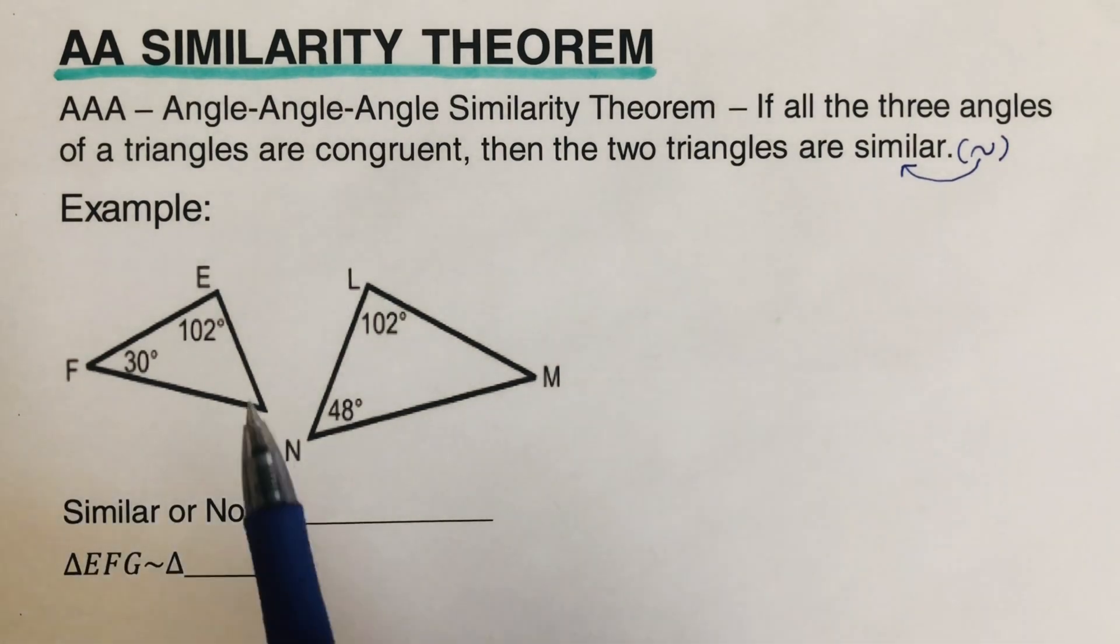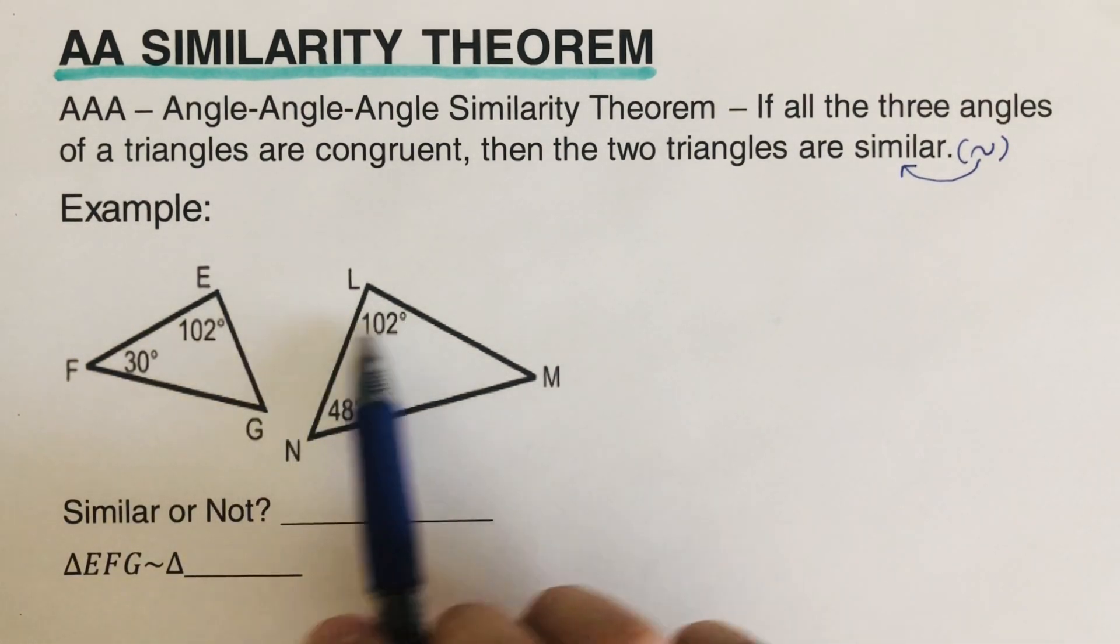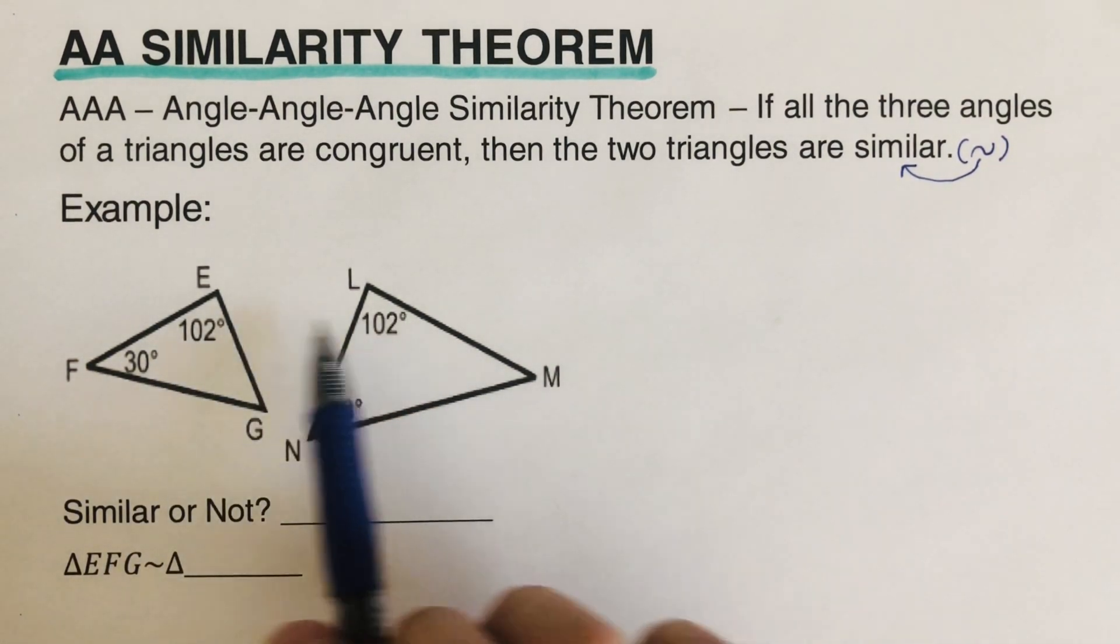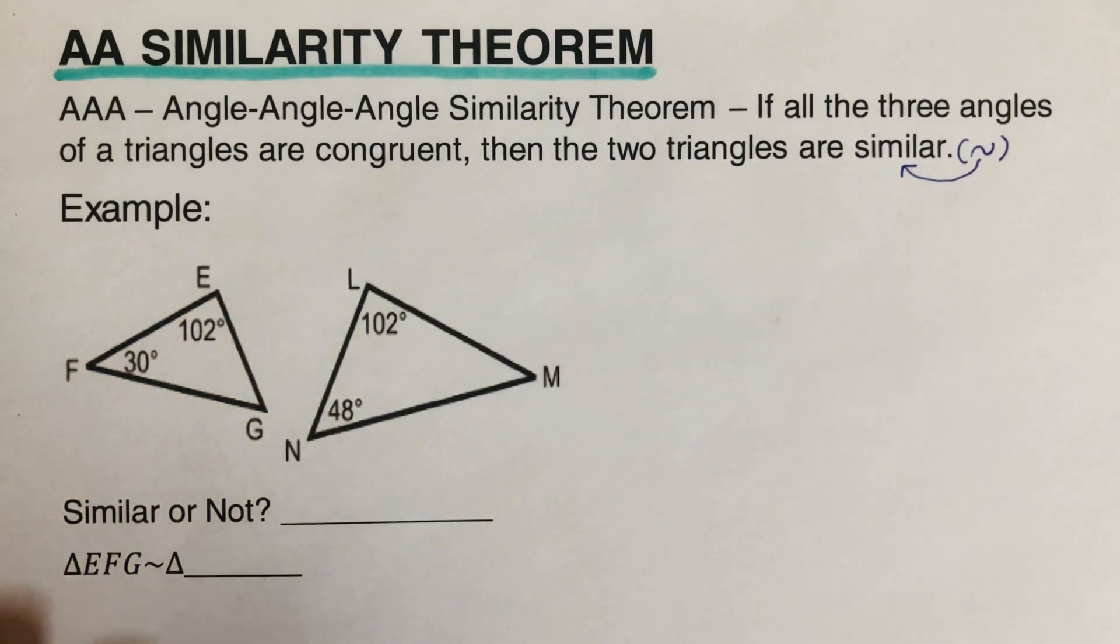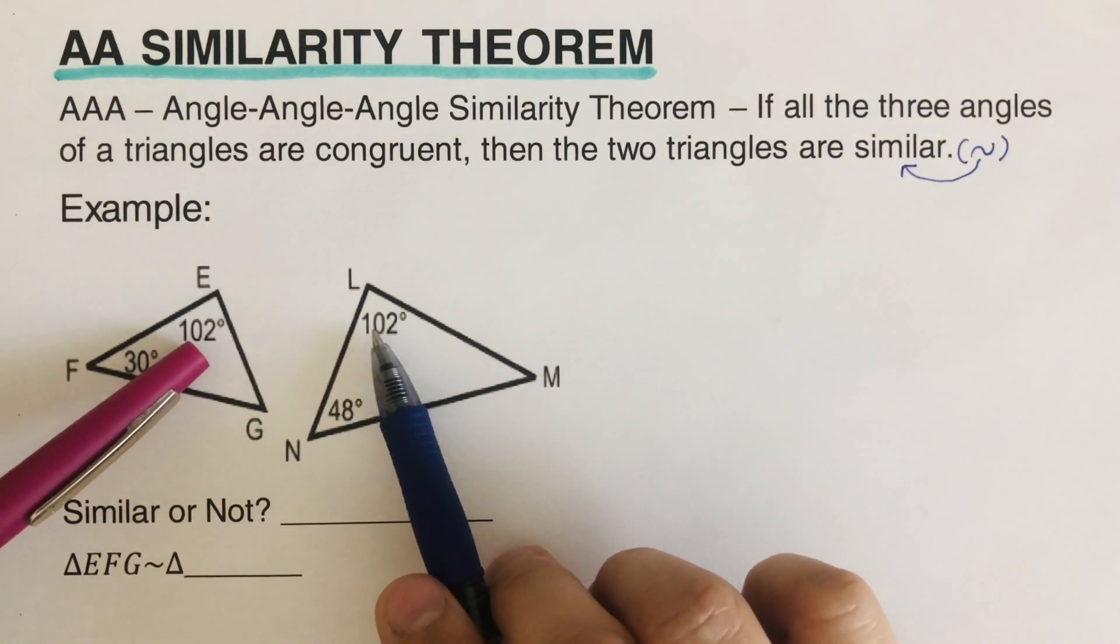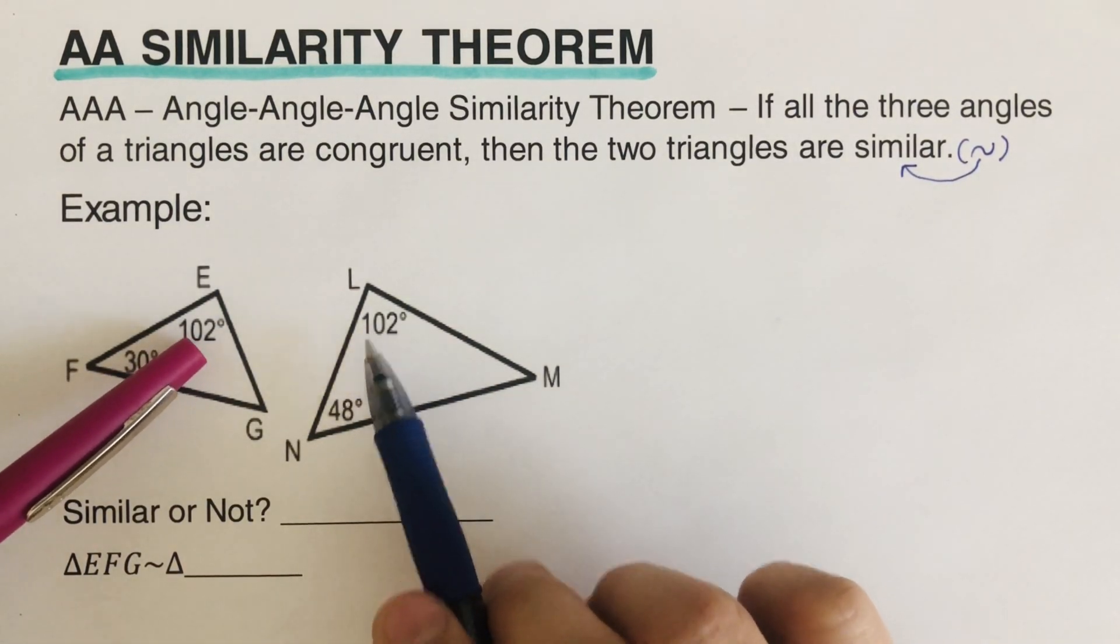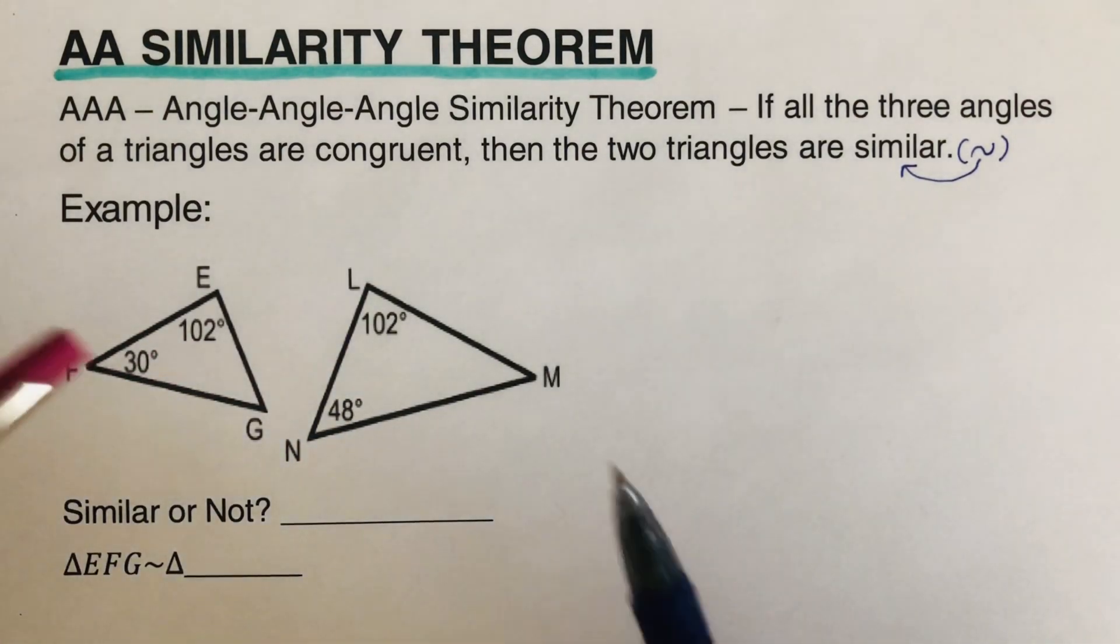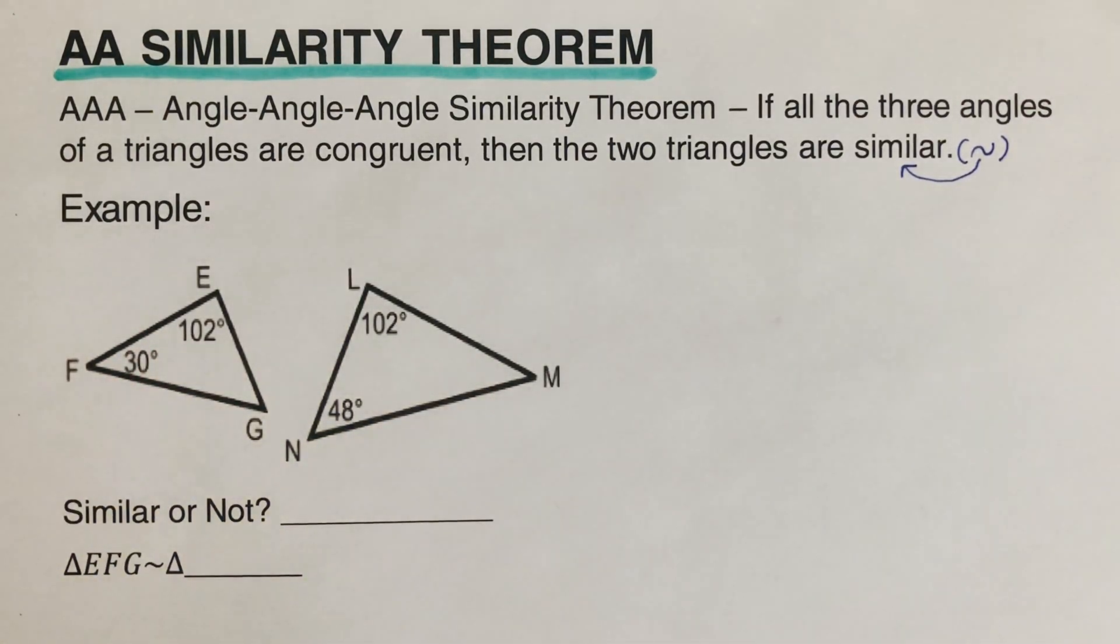So again, our task is to determine if all of the angles are the same. So if all of the three angles, or if we can spot two angles that are congruent, then they are similar. We already know that 102 and 102 are congruent, so we need to have just one angle, or we can find all the three angles and then go from there whether it's similar or not.